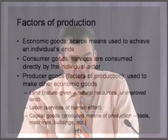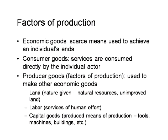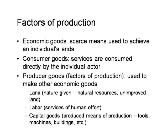Producer goods or factors of production are goods used in the process of making other economic goods. For example, land — and when the economist speaks of land, he means not just land in the common everyday sense, but the part that is nature-given or God-given, not improved through human activity. So by land we mean natural resources, unimproved land, and so on. Labor — the services of human effort — is a producer good because we don't consume labor directly.